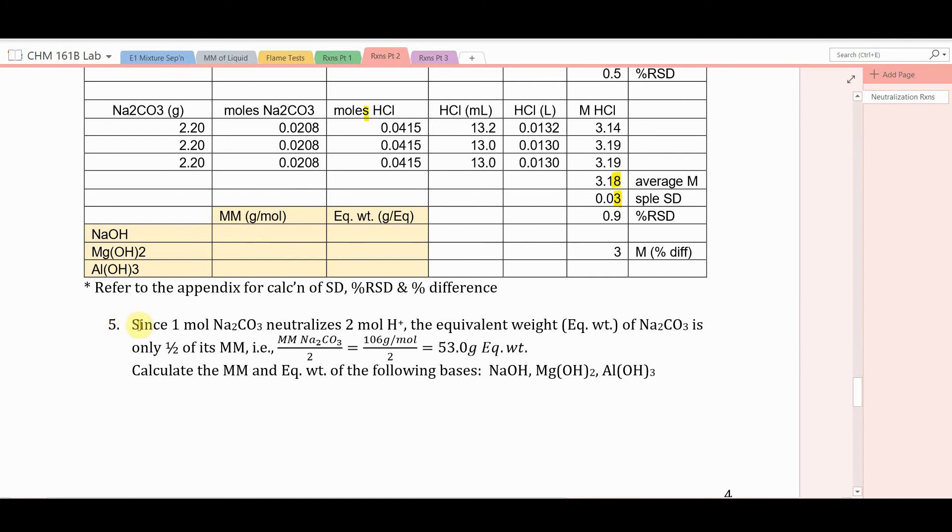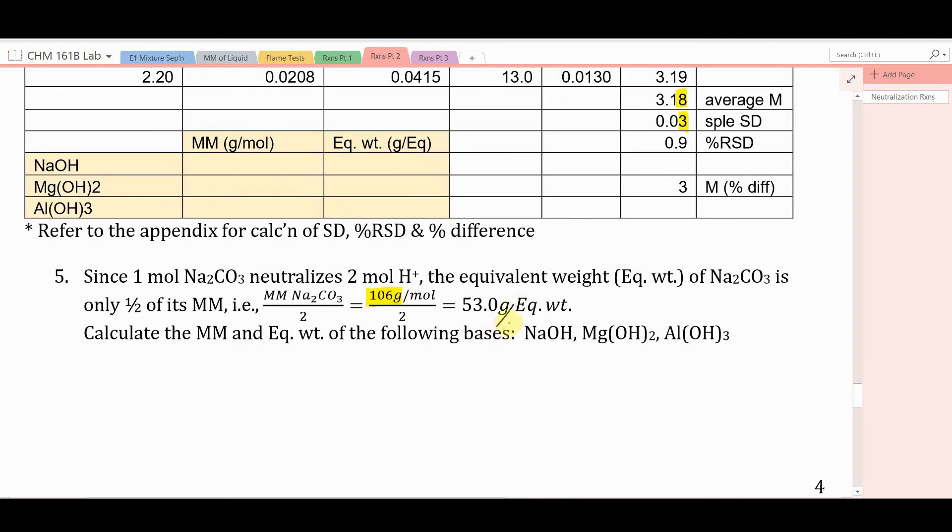Alright, number five. New concept here. Since one mole of sodium carbonate neutralizes two moles of hydrogen ion, what's the equivalent weight of sodium carbonate? What I'm asking you is, what weight of sodium carbonate would neutralize just one mole of hydrogen ion? Well, we know that 106 grams is a mole of sodium carbonate, and that neutralizes two moles of HCl. How much for one mole? We'll divide by two. So, 53 grams per equivalent is the equivalent weight of sodium carbonate.